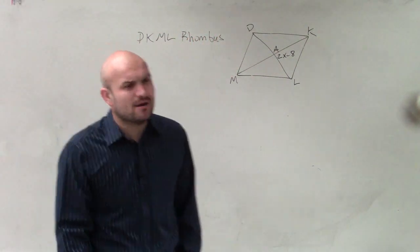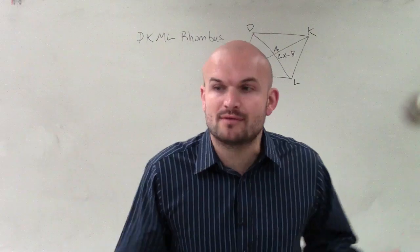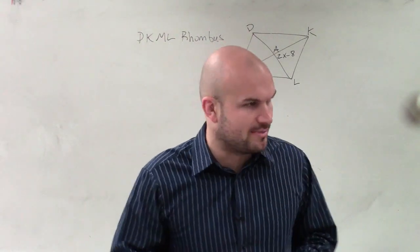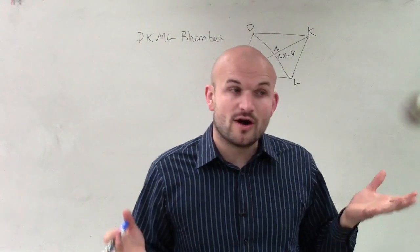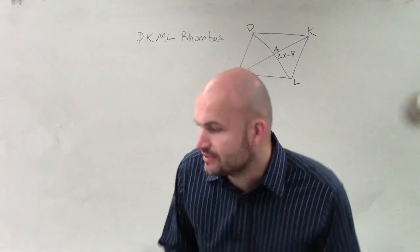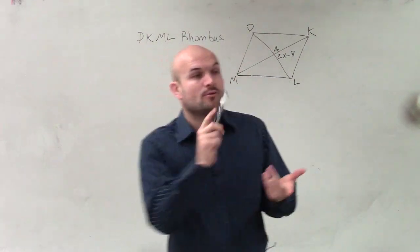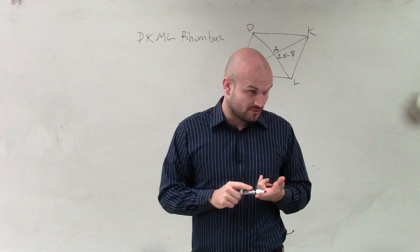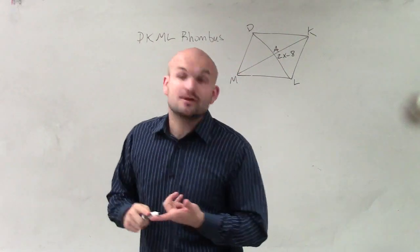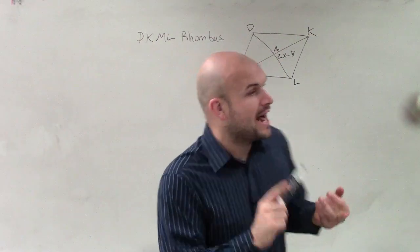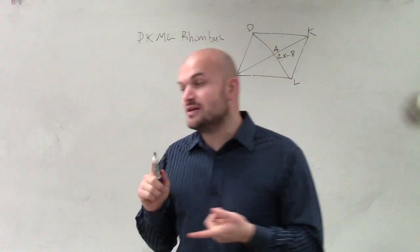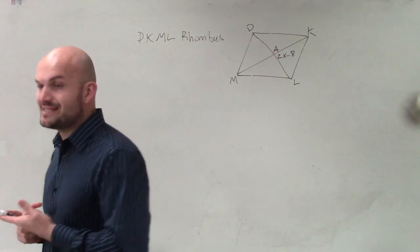Alright. So now, ladies and gentlemen, we need to go back to our notes and think about what is everything new that we learned about a rhombus. So far in a parallelogram, I'll go through the steps. We know parallelogram opposite sides are equal, opposite angles are equal, opposite sides are congruent, and diagonals bisect each other.